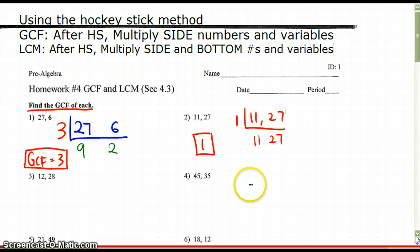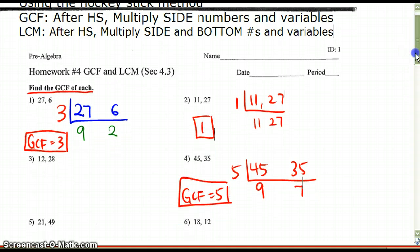Let's try number 4. If I'm dividing 45 and 35, I can divide both by the number 5. And that would give me 9 here and 7 here. And 9 and 7 cannot be divided by anything more. And so my greatest common factor would just be the number 5. Very simple.